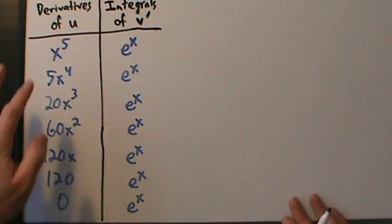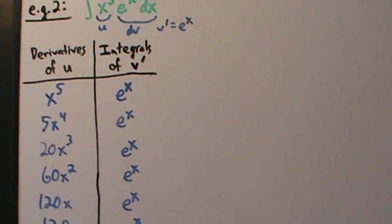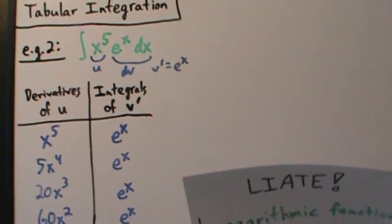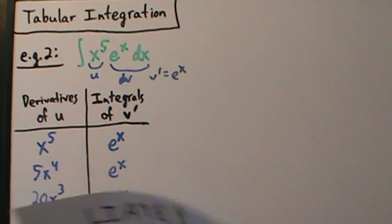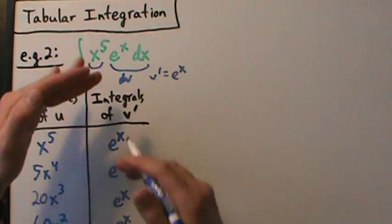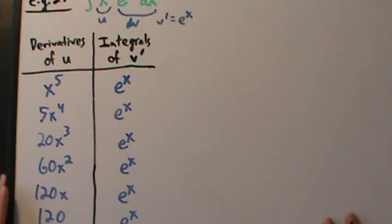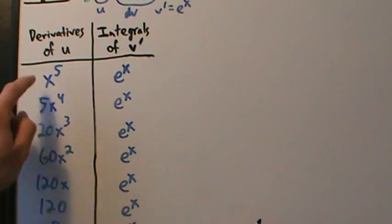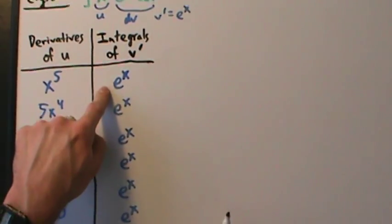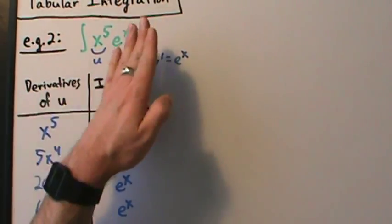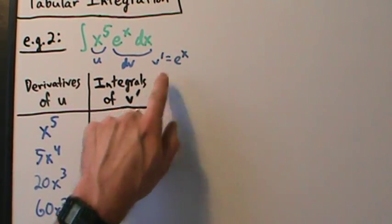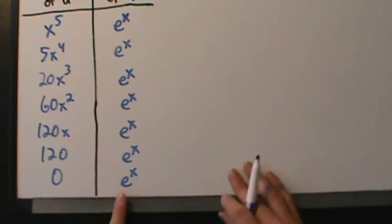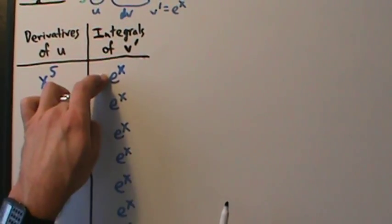We always do the same thing first: set up the table, get our u based on the LIATE rule for integration by parts, because tabular integration is just a repeated integration by parts squished together in compact form. Take derivatives of u until you get to zero. For the v' column, dv is eˣ dx — take off the dx and you just have eˣ, which is v'. Then keep integrating until you reach the row where the zero is.